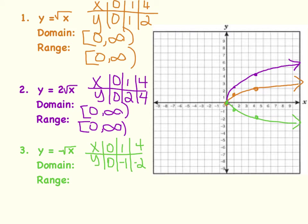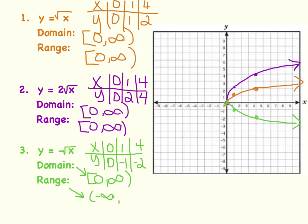What do you notice about the green line compared to the orange and blue ones? It is reflected over the x-axis. This has no effect on the domain — it's still from 0 to positive infinity. But it does affect the range. Instead of going from 0 up to infinity, we go from negative infinity up to 0. So the range is from negative infinity to 0.